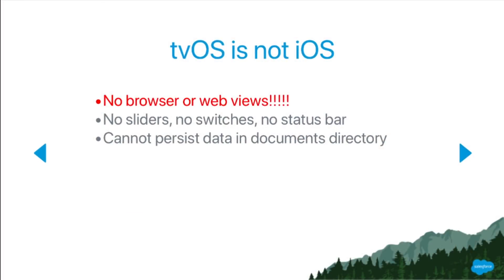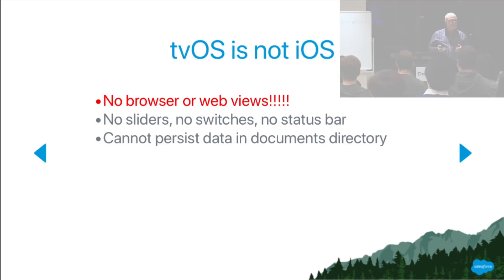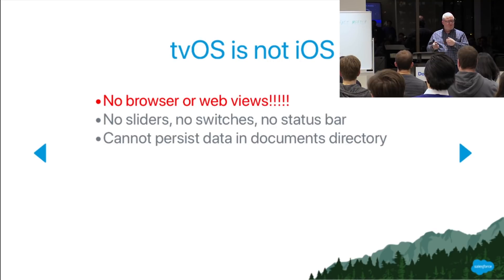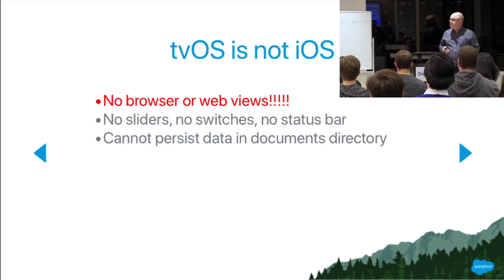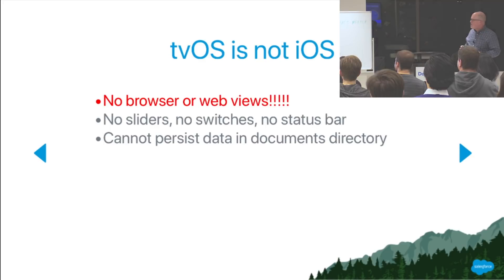But first of all, you've got a big problem: there's no browser, no web views, no sliders, no switches — a lot of UI elements that are on the phone don't exist on Apple TV. For example, if you're persisting data, there's no documents directory. So when you quit a tvOS application, all the data stored in the cache directory goes away. Apple doesn't allow you to store any data persistently.